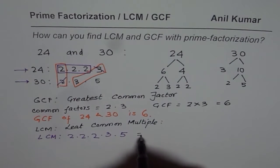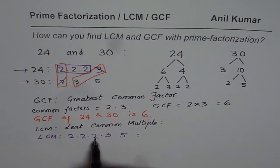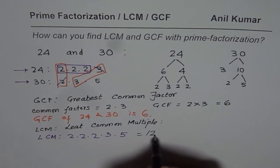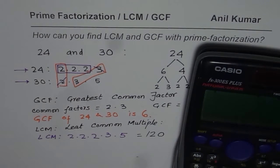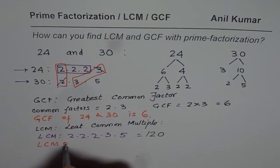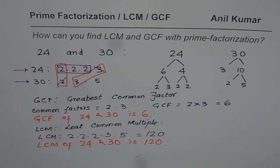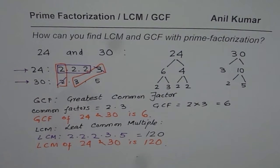So now we can multiply: 5 times 3 is 15, 15 times 2 is 30, twice 30 is 60, twice 60 is 120. So 2 times 2 times 2 times 3 times 5 equals 120. The least common multiple of 24 and 30 is 120. Remember: the least common multiple is always a higher number than the greatest common factor — factor means smaller, multiple means higher.